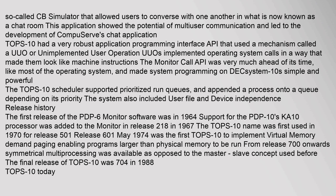The first release of the PDP-6 monitor software was in 1964. Support for the PDP-10's KA-10 processor was added to the monitor in release 218 in 1967. The TOPS-10 name was first used in 1970 for release 501. Release 601 in May 1974 was the first TOPS-10 to implement virtual memory demand paging, enabling programs larger than physical memory to be run. From release 700 onwards, symmetrical multiprocessing was available, as opposed to the master-slave concept used before. The final release of TOPS-10 was 7.04 in 1988.